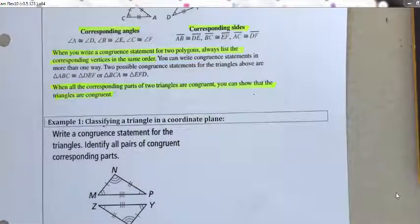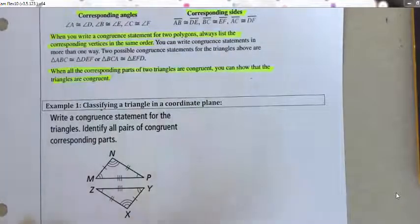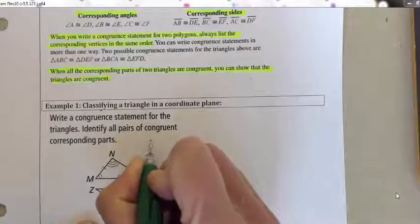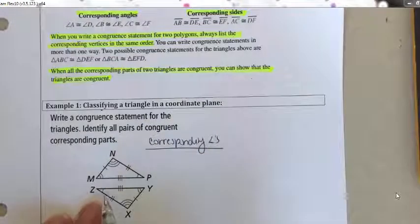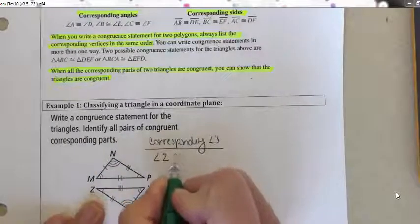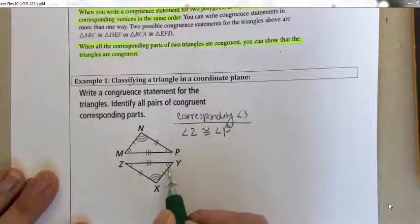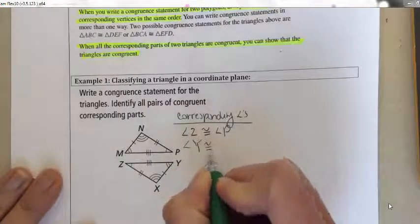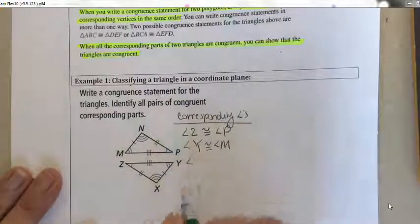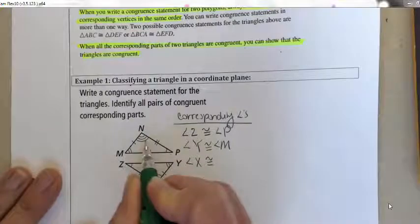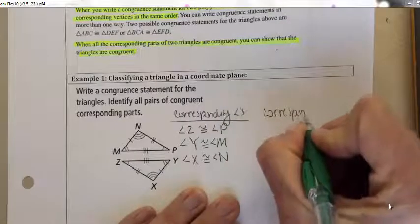Example one: write a congruent statement for the triangles and identify all pairs of congruent corresponding parts. Let's start with corresponding angles. Angle Z is congruent to angle P — they both have one arc. Angle Y is congruent to angle M — they both have two arcs. Angle X is congruent to angle N — they both have three arcs.